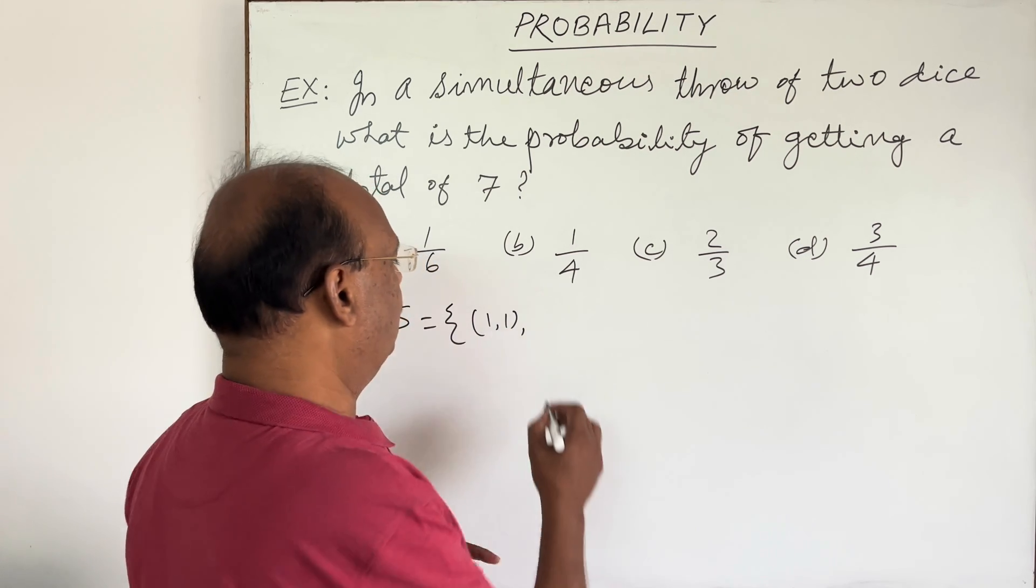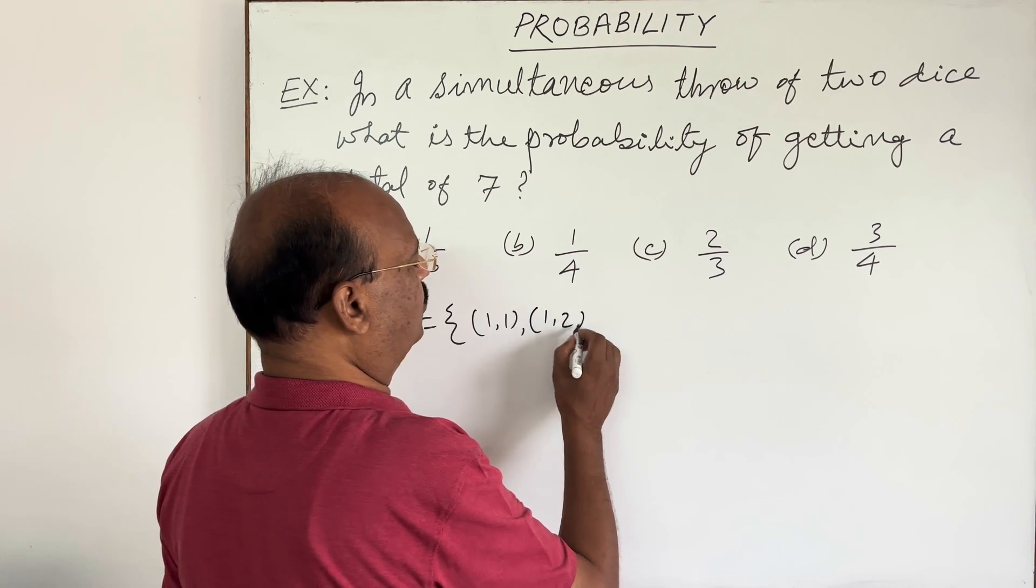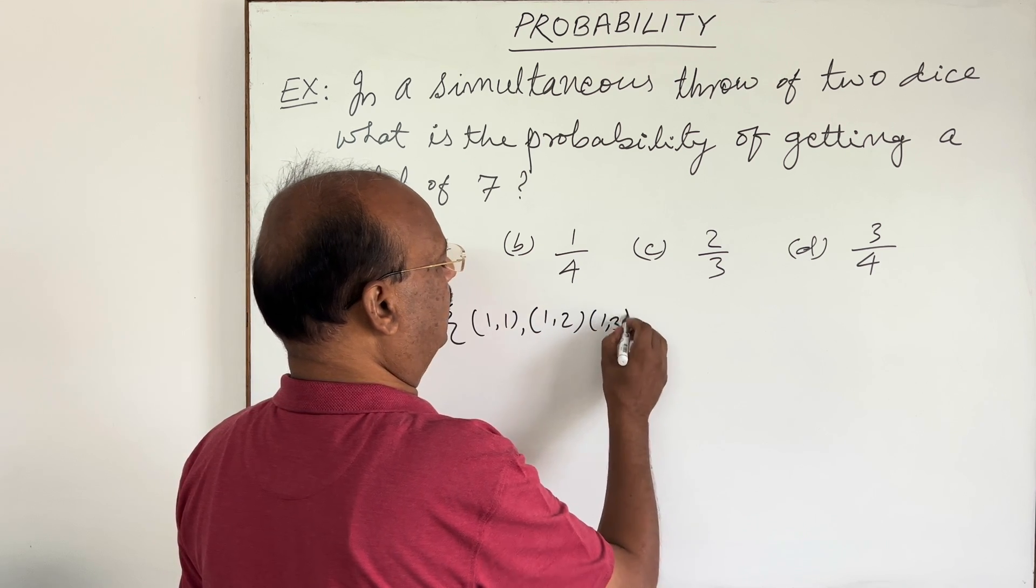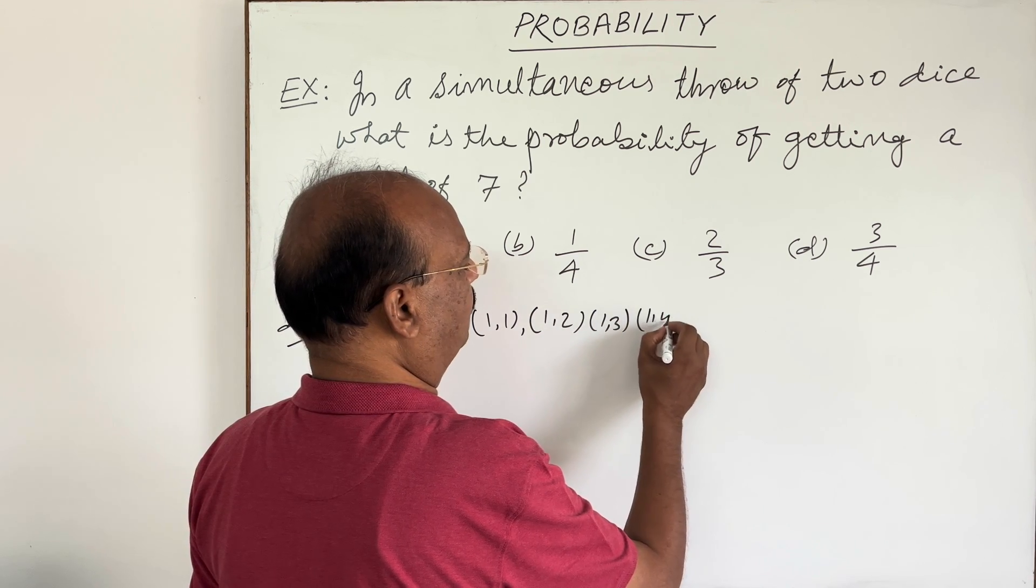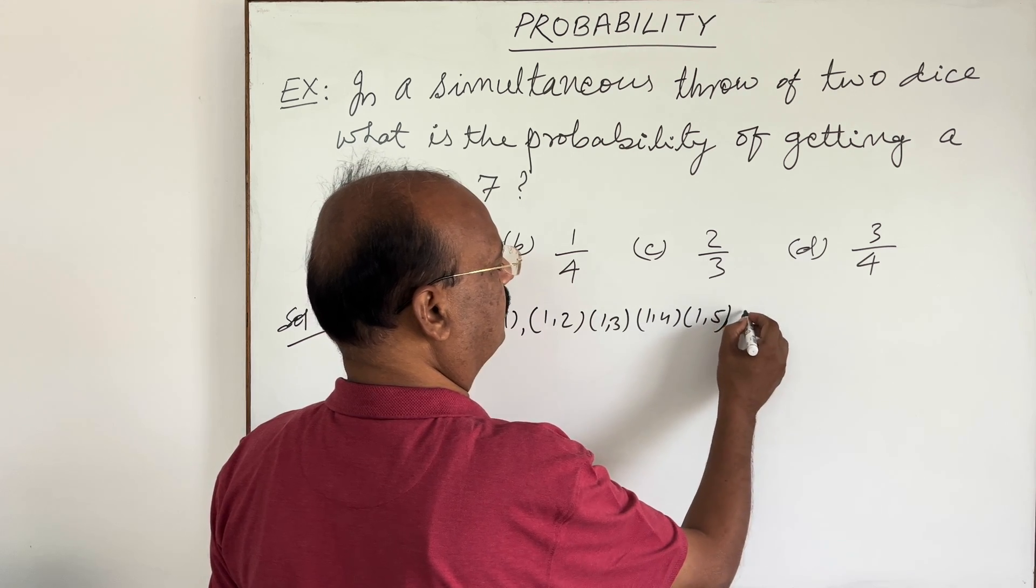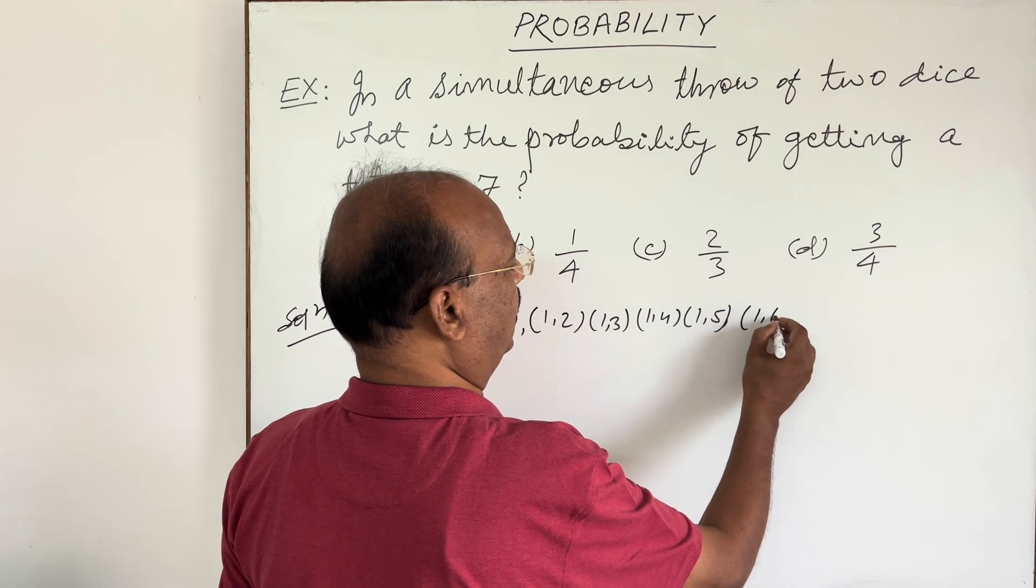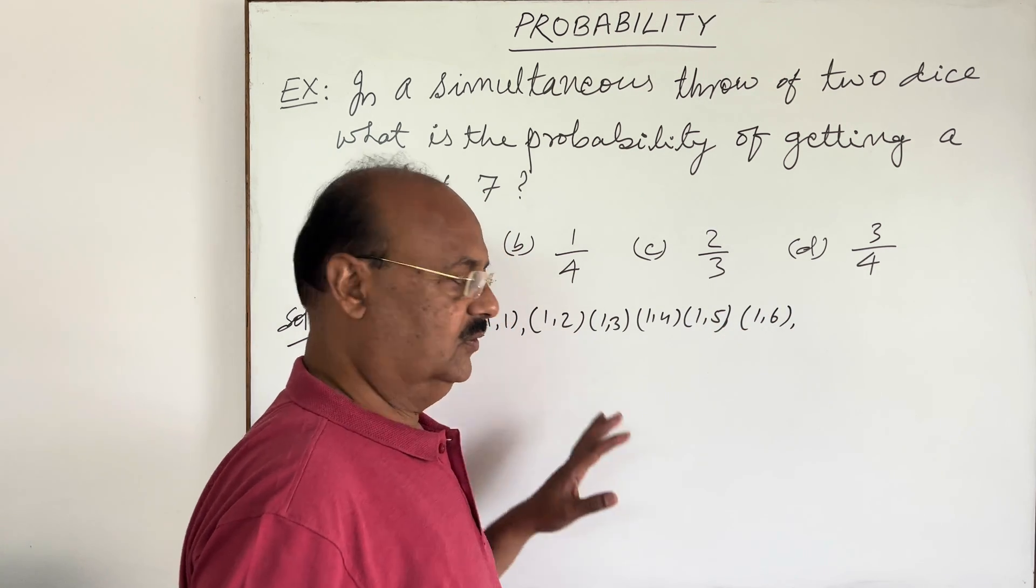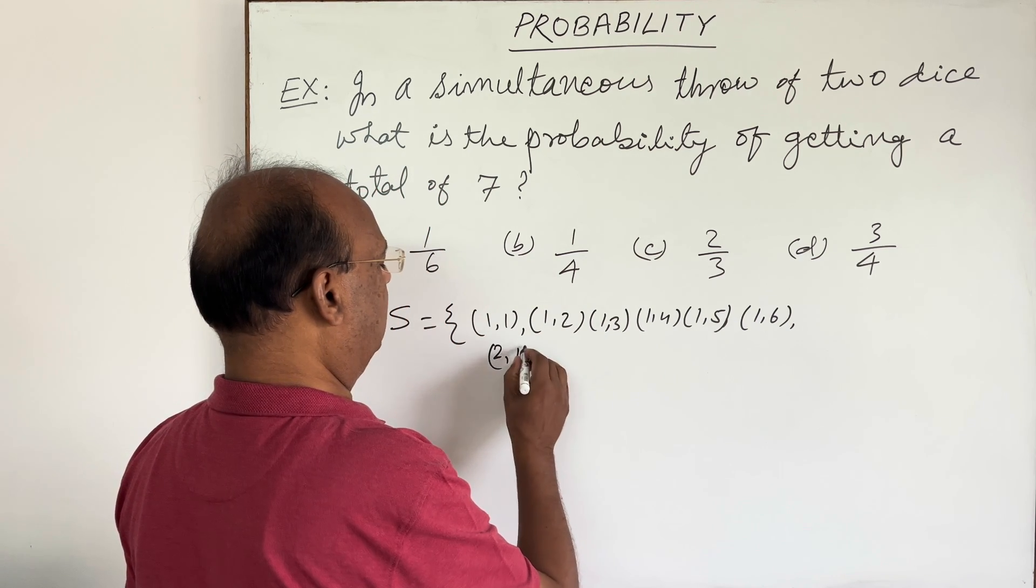Also (1,2), (1,3), (1,4), (1,5), (1,6), then (2,1), (2,2), and so on up to (2,6).